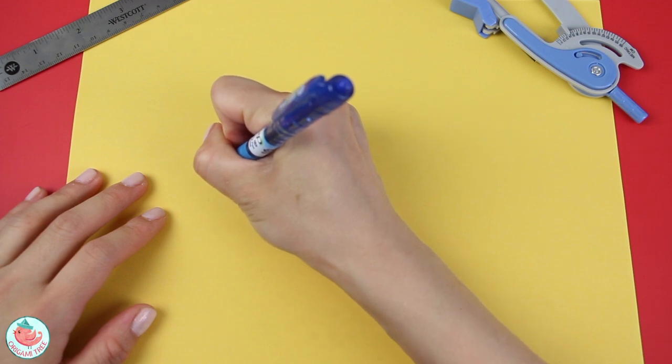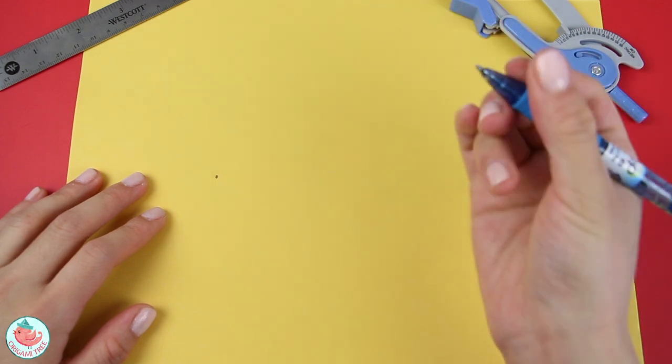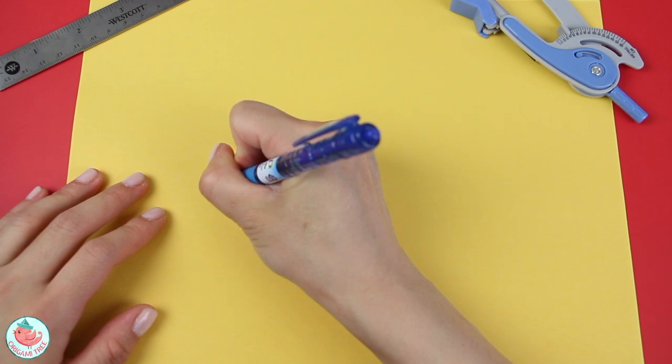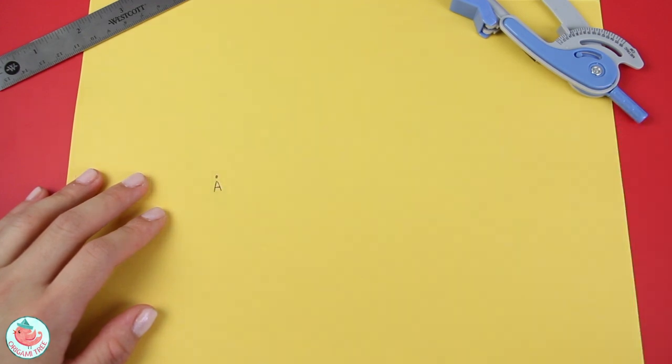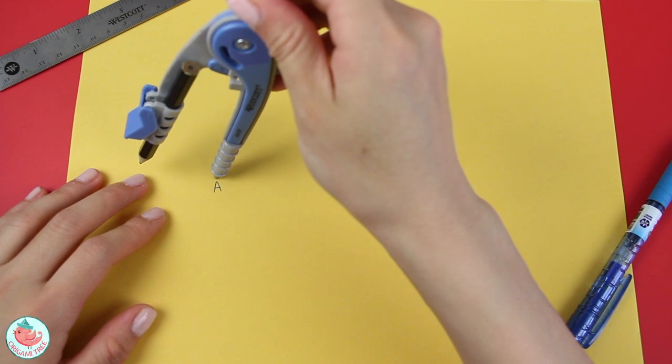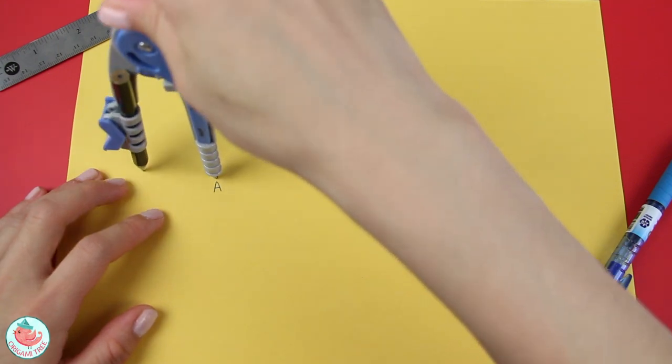Now, you want to start off with one circle, so I'm going to put a little point over here to indicate the center point of circle number one, and I'm going to call this A. After that, you want to grab your compass, and using the center point as A, you're going to draw a circle.